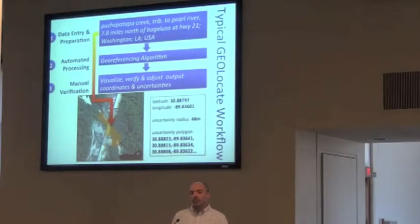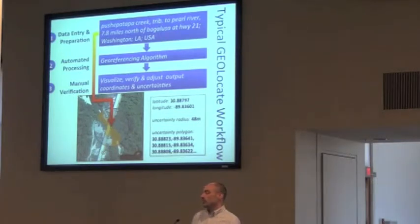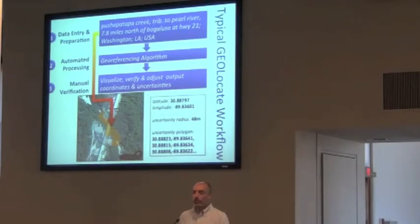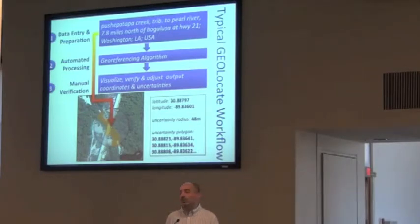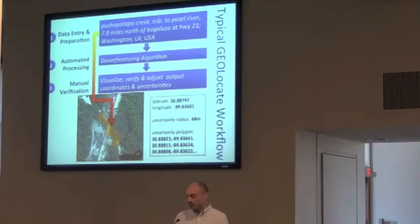And then there's the manual phase. The initial outputs of Geolocate are just guesses from a computer program. So now it's up to an end user to look at those results and say yes, this is correct, or no, this isn't correct, and make any kind of adjustments as necessary.